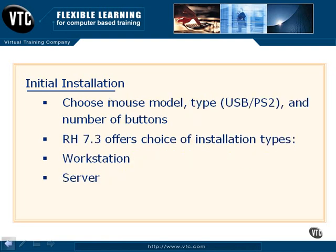Moving forward, we get to choose our mouse model and type. This is important because you have various numbers of buttons on your mouse — it can be USB, PS2, or even in some circumstances a serial mouse. We want to choose the appropriate configuration so Linux can interpret mouse clicks properly. There's also an interesting feature called three-button emulation, which allows you to use an alternate key to act as if you have a third button on your mouse, providing additional functionality inside Linux.